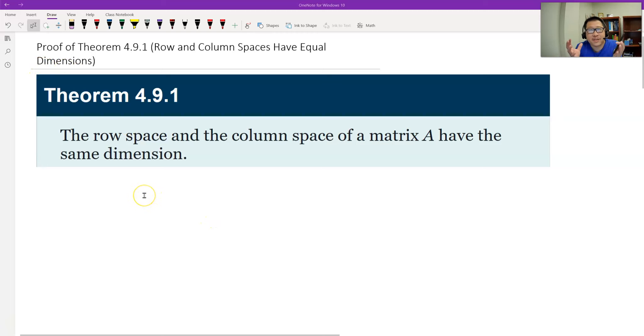Row and column spaces have the same dimension. No matter how big the matrix you have, if you look at the row space and column space, the dimension is always the same. Let's see why.